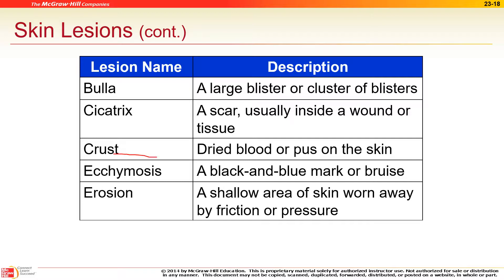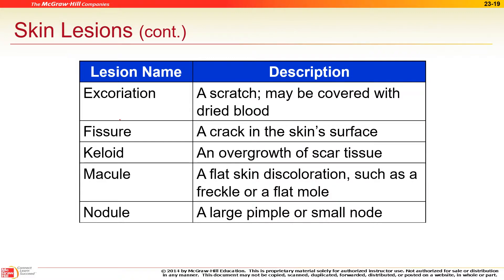An ecchymosis is a bruise — blood cells under the skin that are dying and discoloring as the immune system removes them. A fissure is like a crack in the skin — imagine the folds where your index finger and thumb meet. The same can happen at the anus, and since you can't stop using that area, fissures can be very hard to heal.